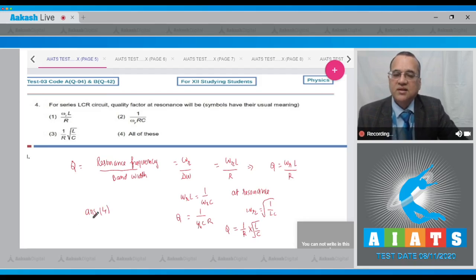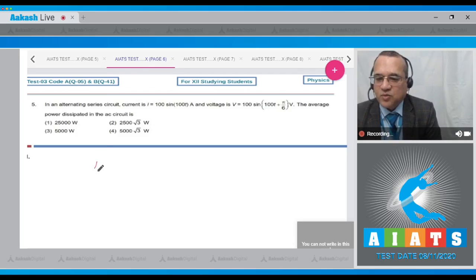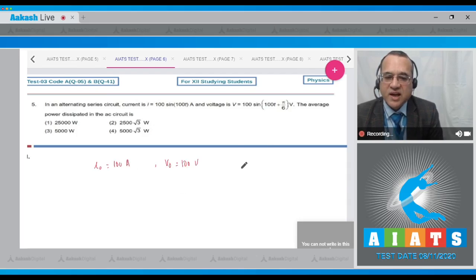Let us go to question number 5. In an alternating series circuit, the current is 100 sine of 100T ampere, and the voltage is V equal to 100 sine of 100T plus pi by 6 voltage. The average power dissipated in the circuit is, these are the four options. Look, the current is given. What is the maximum value of the current? This is 100 ampere. What is the maximum voltage? The maximum voltage is equal to 100 volt. What is the phase angle? If you take the phase angle, this phase minus this phase, the phase angle is equal to pi by 6.